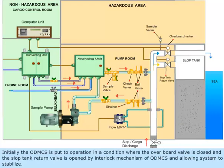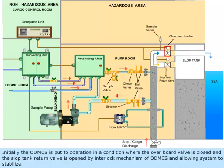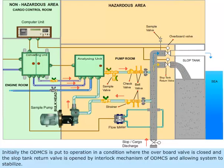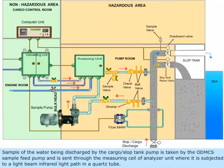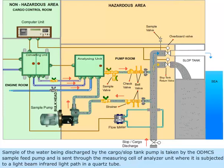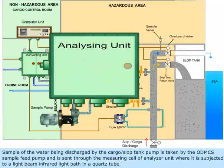Initially, the ODMCS is put to operation in a condition where the overboard valve is closed and the slop tank return valve is opened by the interlock mechanism of ODMCS, allowing the system to stabilize. A sample of the water being discharged by the cargo or slop tank pump is taken by the ODMCS sample feed pump and sent through the measuring cell of the analyzer unit.